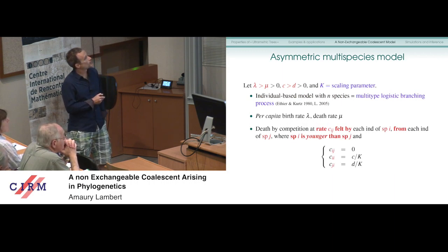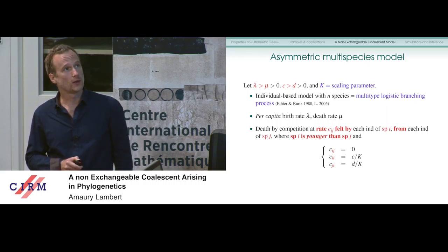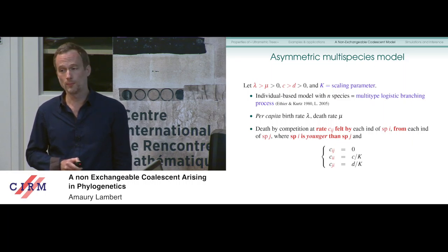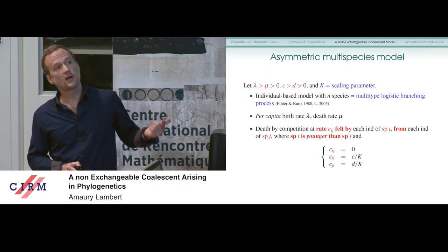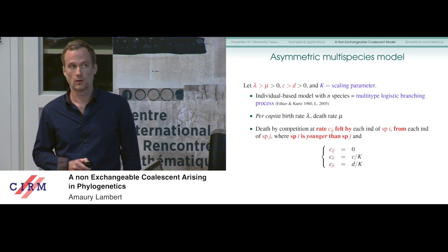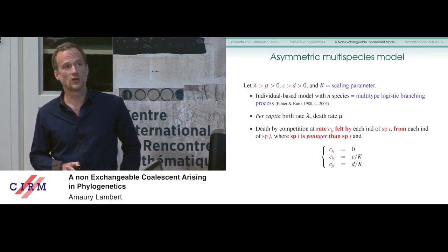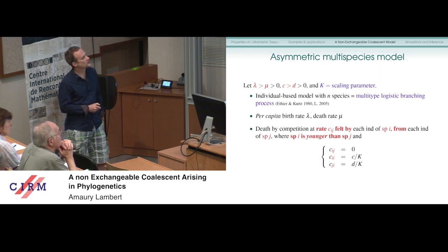What's this model? It's the asymmetric multi-species model where, when you have N species, all individuals perform a multi-type logistic branching process. You have a per capita birth rate lambda, death rate mu, and also competition at a rate depending on the ranks of the species. C_{ij} is the competition felt by each individual of species i from each individual of species j, where species i is always younger than species j. To capture the idea that younger species do not feel competition from older species, we took C_{ij} = 0.